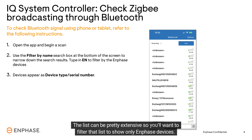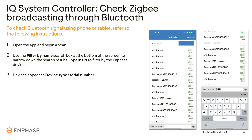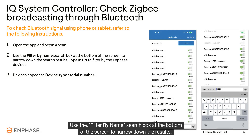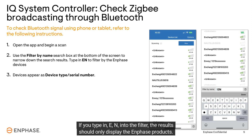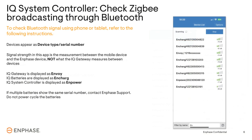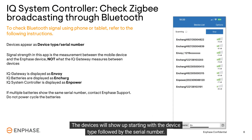Use the filter by name search box at the bottom of the screen to narrow down the results. If you type "en" into the filter, the results should only display the Enphase products. The devices will show up starting with the device type followed by the serial number.